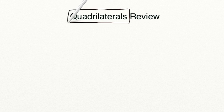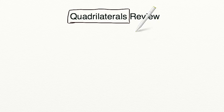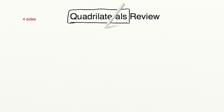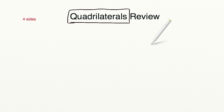Every shape that we build today below quadrilaterals must be a quadrilateral, which means every shape must have four sides. The higher the word is on the hierarchy diagram, the broader the word will be. The lower we go on our diagram, the more specific the word will be. Here, let me show you.